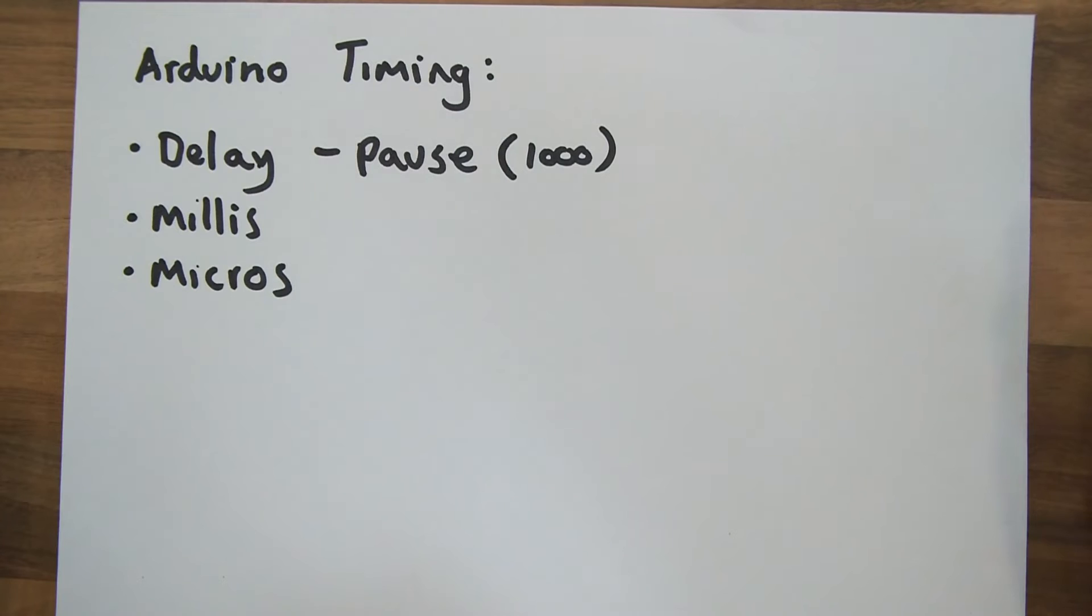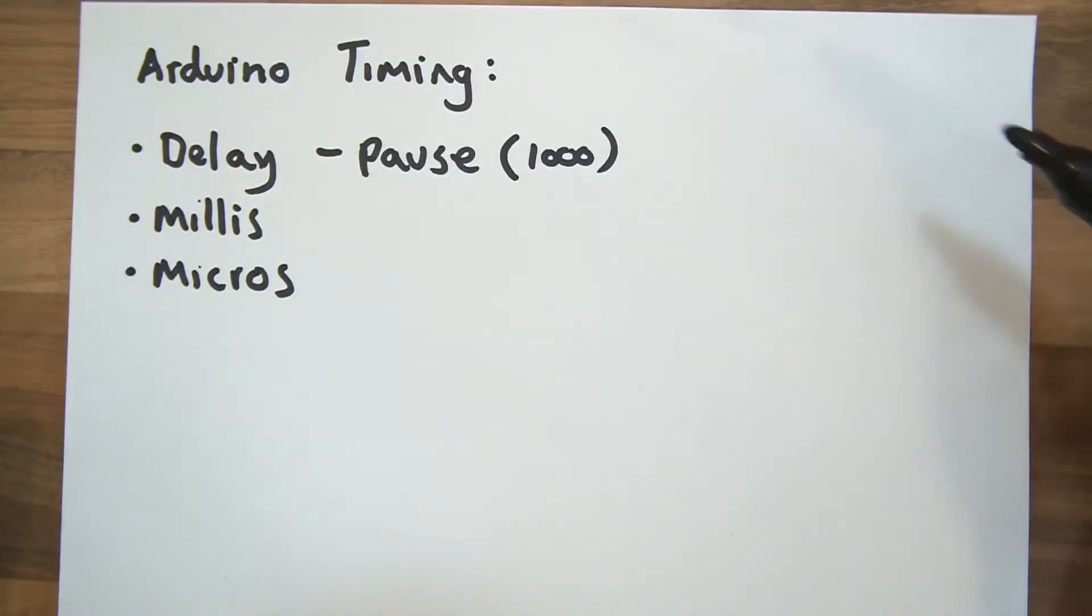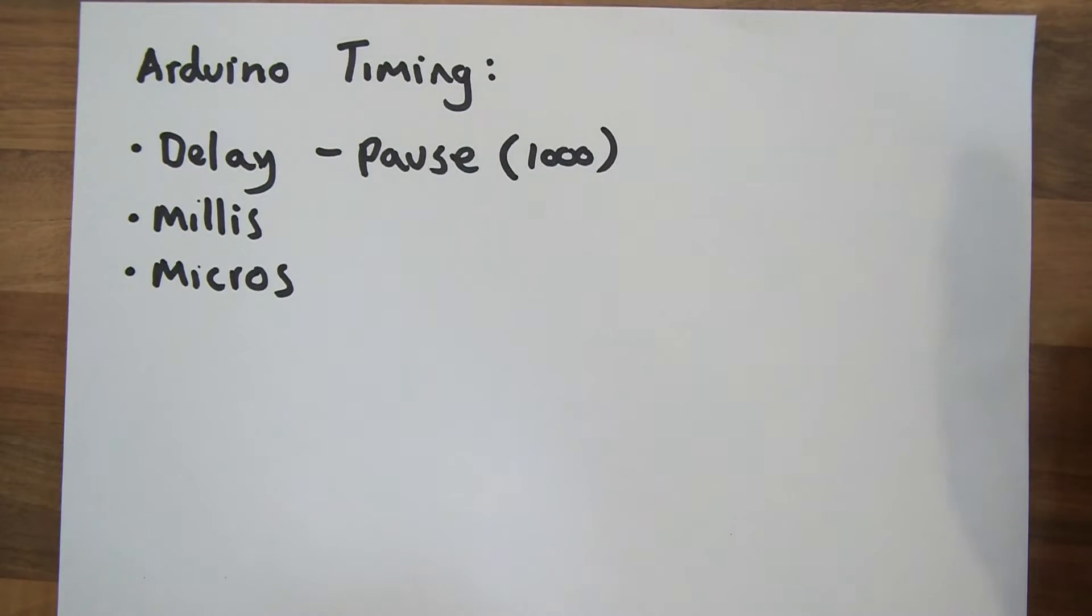One of the problems with the delay keyword, or the delay method if you like, is that it's blocking. And what I mean by blocking is that it effectively blocks the processing of the rest of the program. So if you use the delay keyword, it will block the whole lot. It will make the whole program wait for the amount of milliseconds which you specify.